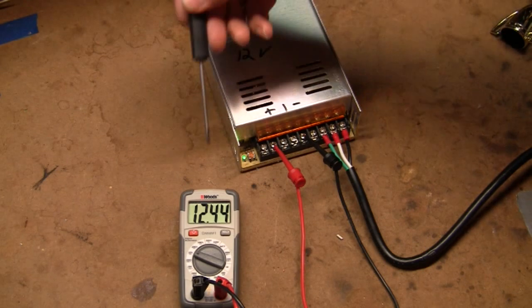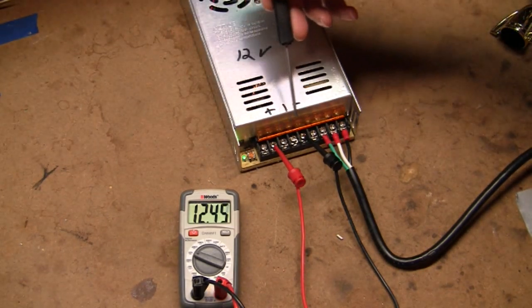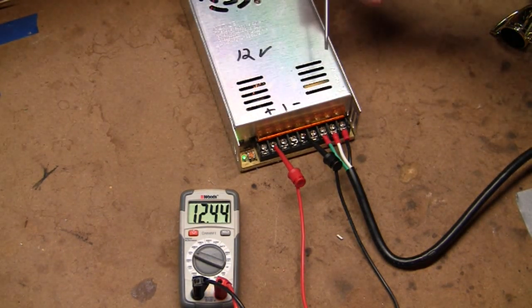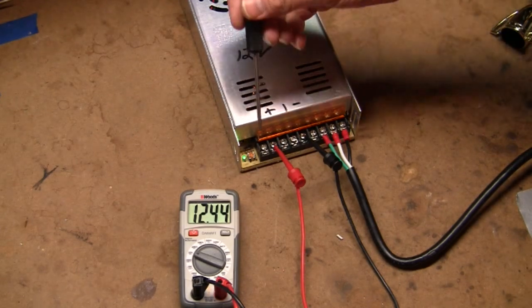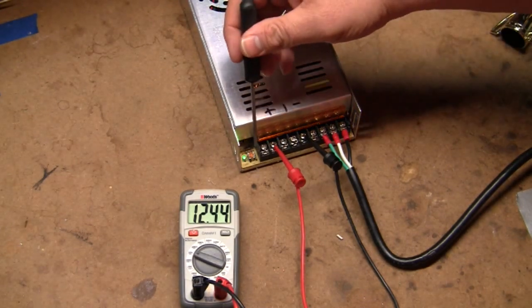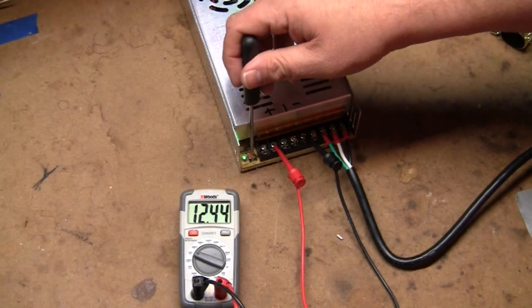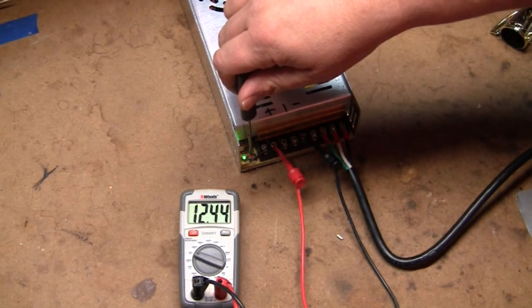I have my multimeter plugged into the power supply, and on the left of the power supply, there's a small screw that controls the voltage where you can go up or down.